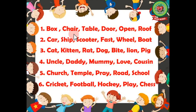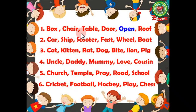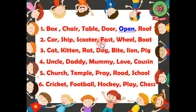You have to underline the word that is not a noun. The answer is 'open' — box, chair, table, door, and roof are names of things, so all these words are nouns. Only 'open' is not a naming word, so we underline 'open'. Now number two: car, ship, scooter, fast, wheel, boat.